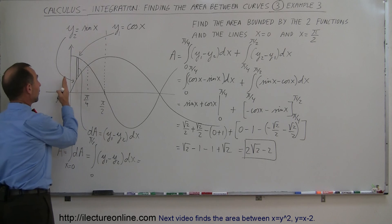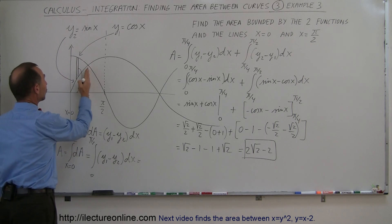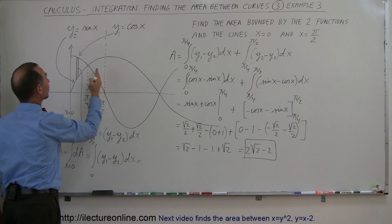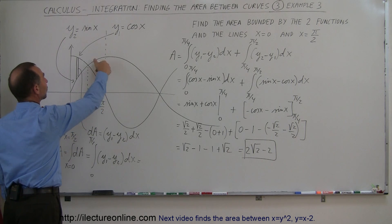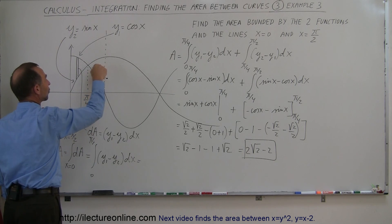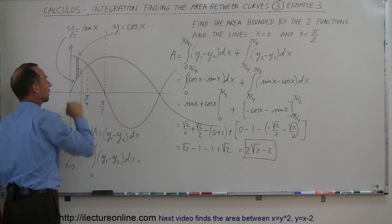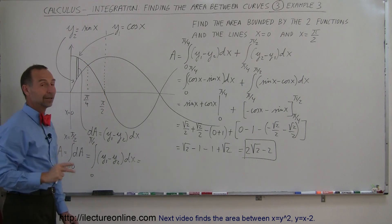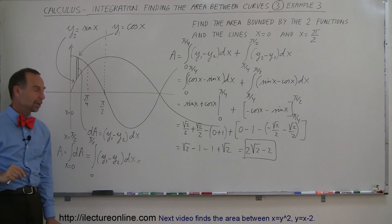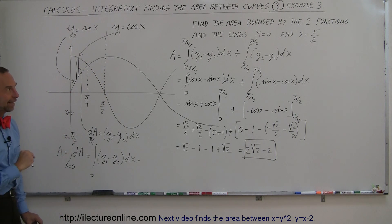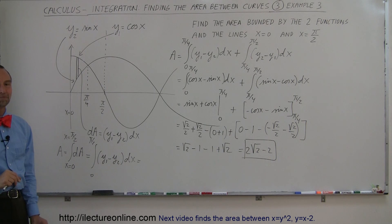Remember, you need to evaluate this in two pieces. Otherwise, since the functions reverse, you're going to get negative area on one side that cancels out the positive area on the other, just like I showed you in the beginning.